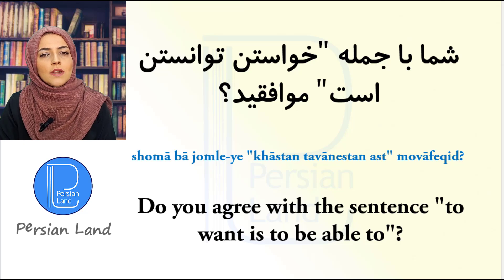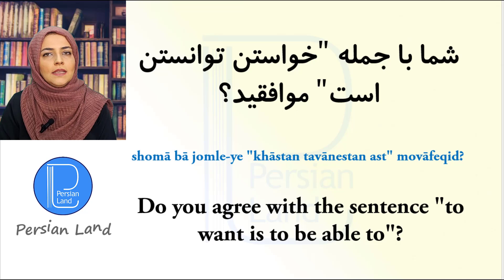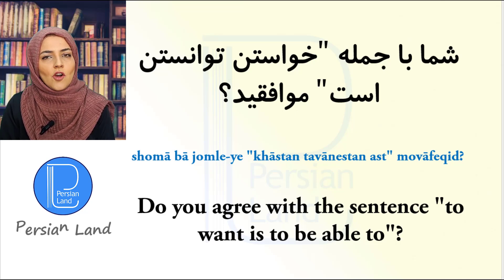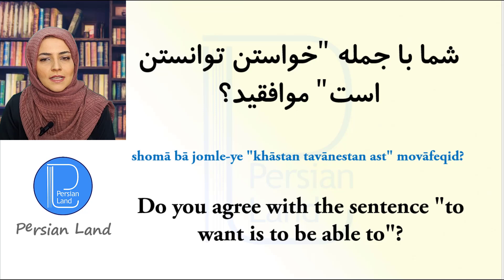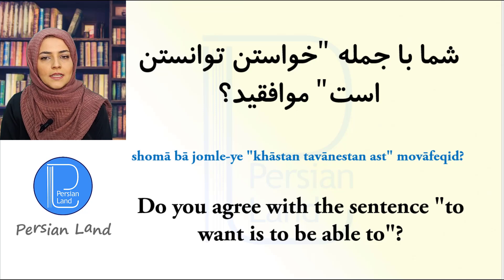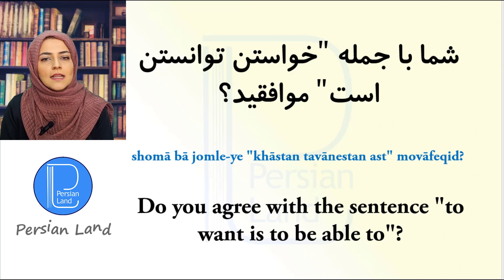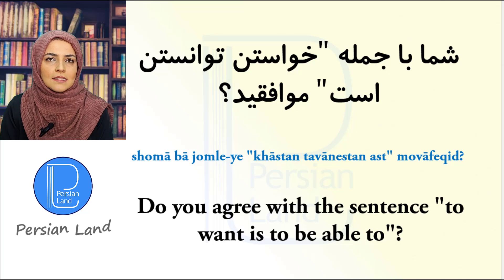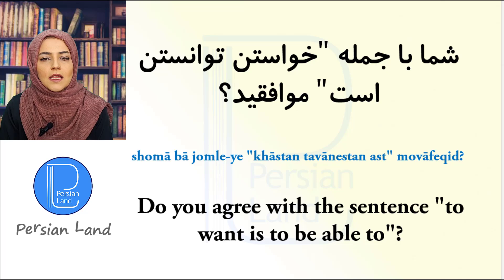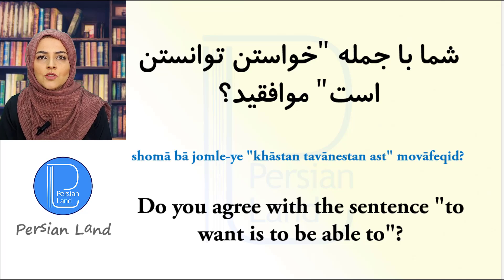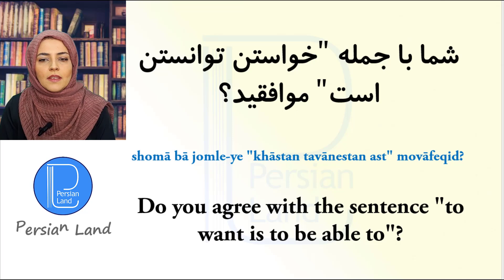شما با جمله خاستن توانستن موافقید؟ خاستن توانستن است — it is a very famous sentence in Farsi. We say 'to want is to be able to' — if you want something, you can do it. Yes, I do agree. من موافقم. موافق بودن means 'to agree'.